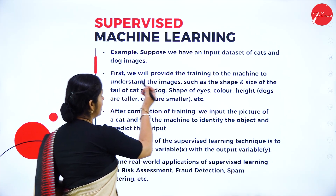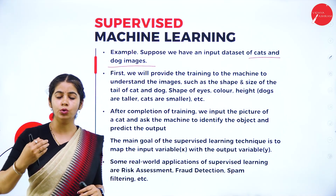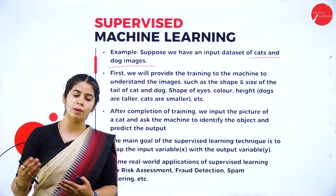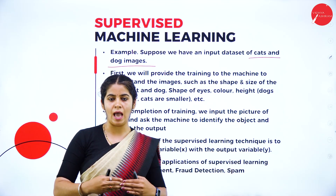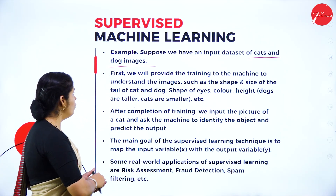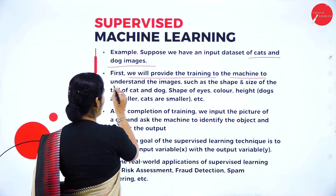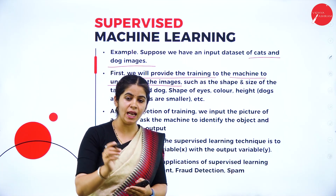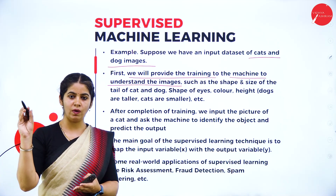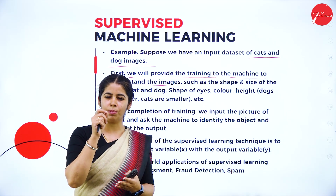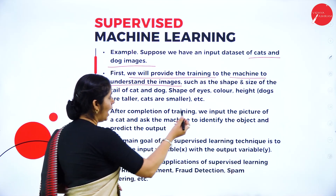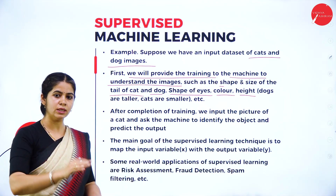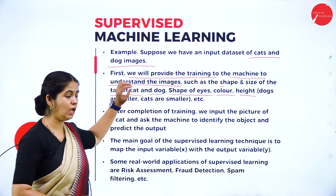A supervised learning example: input data sets for cats and dogs. We provide two images — a cat image and a dog image — and the machine has to find out whether the given image is a cat or a dog. Before giving any image as input, we have to train the machine first. We provide training to the machine to understand the images — the shape and size of the cat and dog, the shape of the tail (a dog's tail is always curving but a cat's tail is not), the shape of the eyes, colors, and height — cats are much smaller compared to dogs. Many features are given for training.